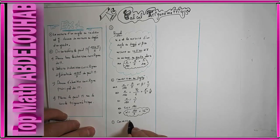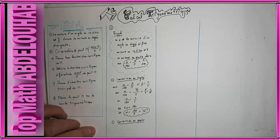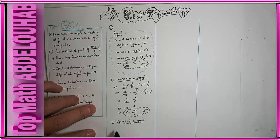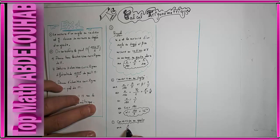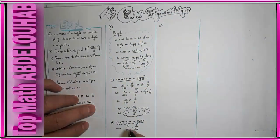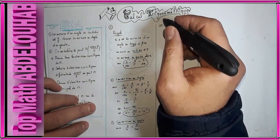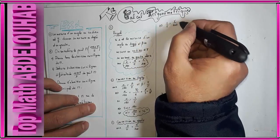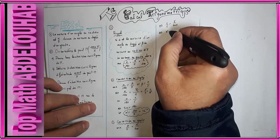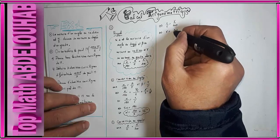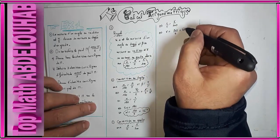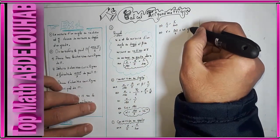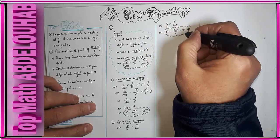Passons à la conversion en grade. Le grade est moins utilisé ; les unités les plus utilisées sont le degré et le radian. On utilise β/π = γ/200. On vient de calculer β/π = 1/5, donc 1/5 = γ/200. Produit des moyens égal produit des extrêmes : γ = 200/5 = 40 grades.